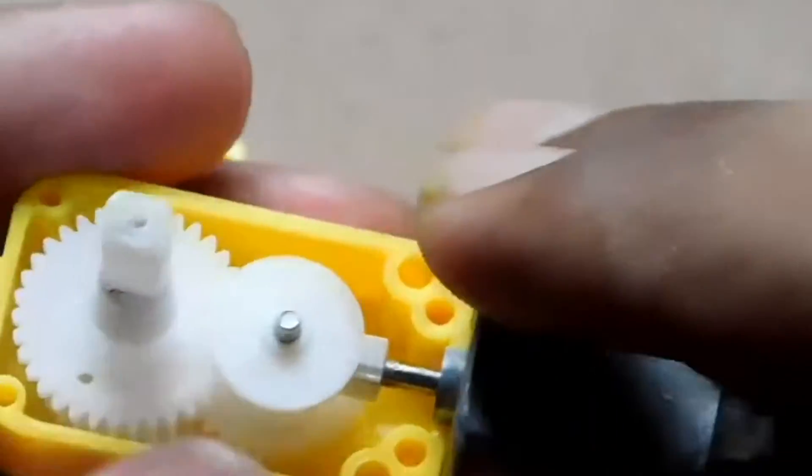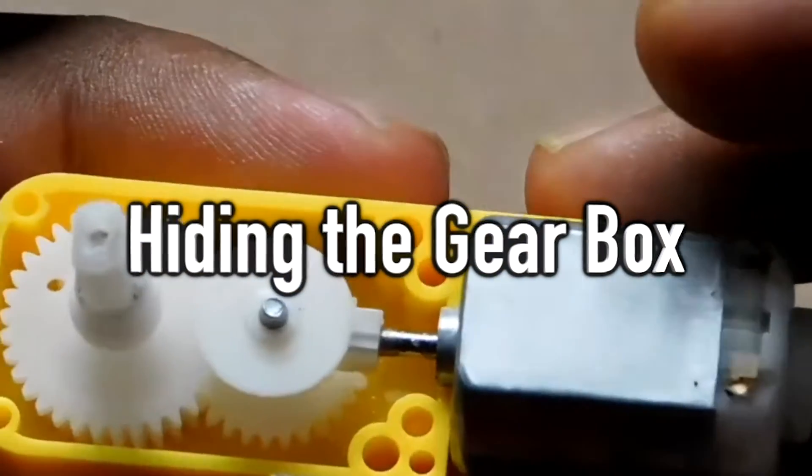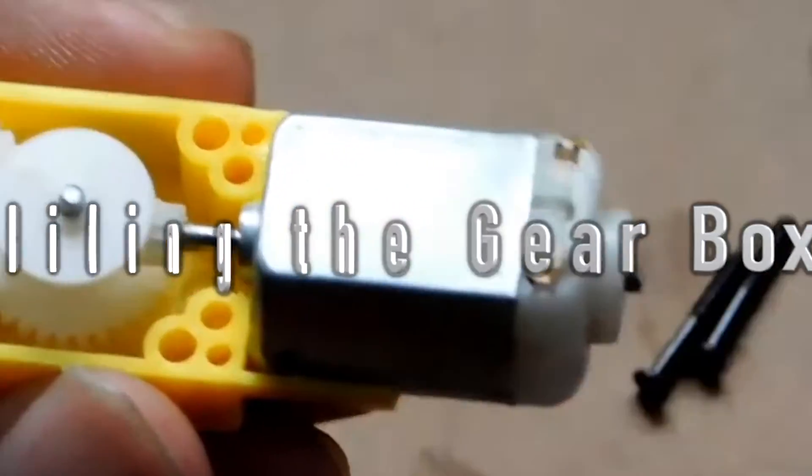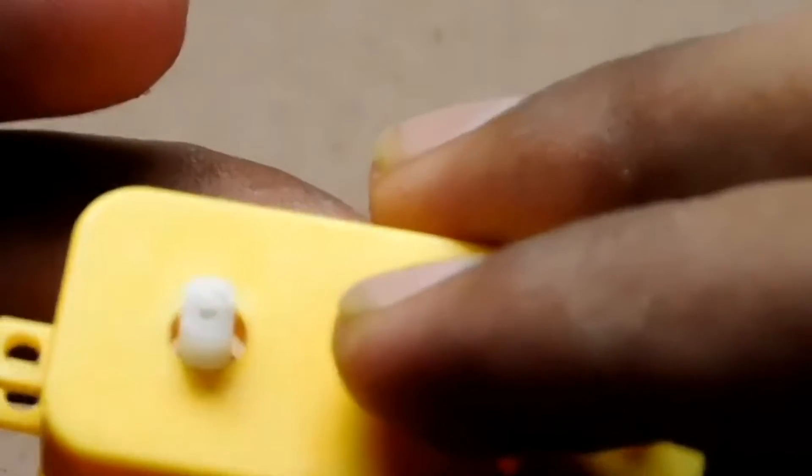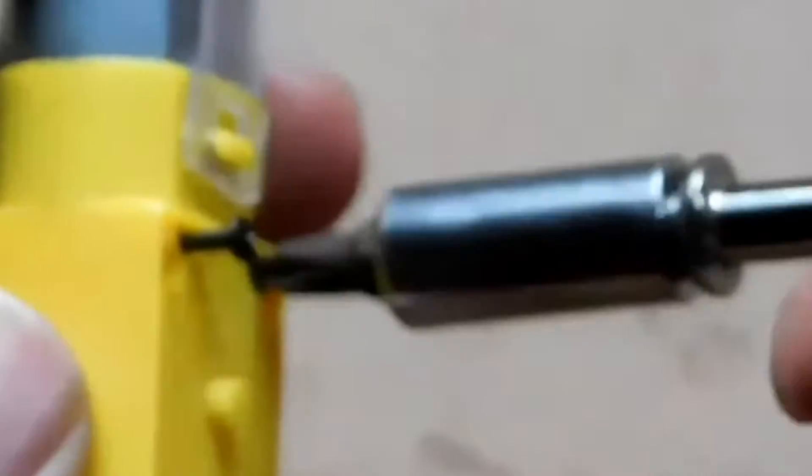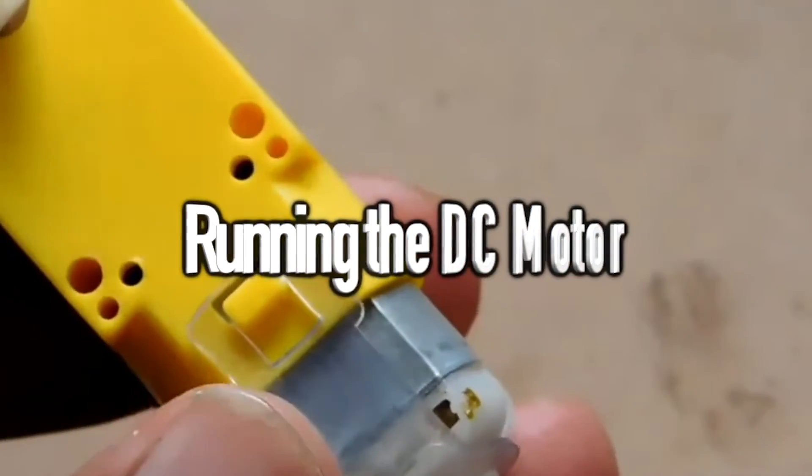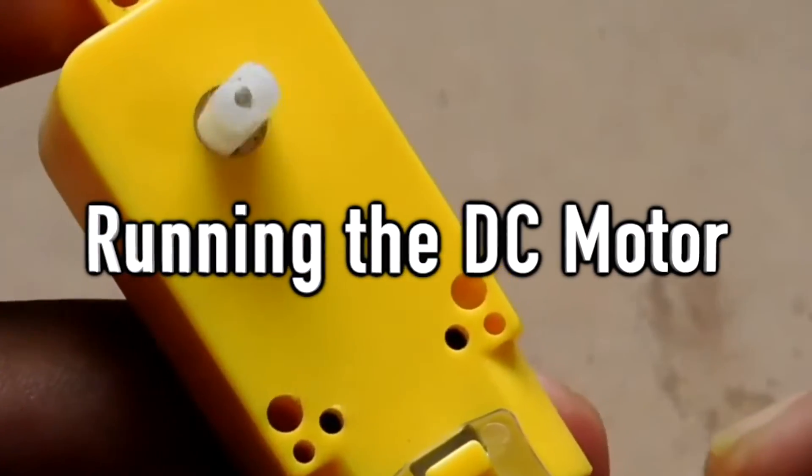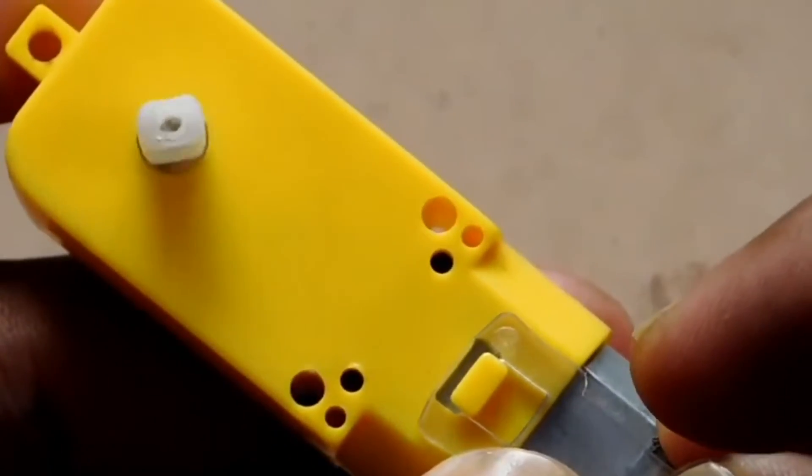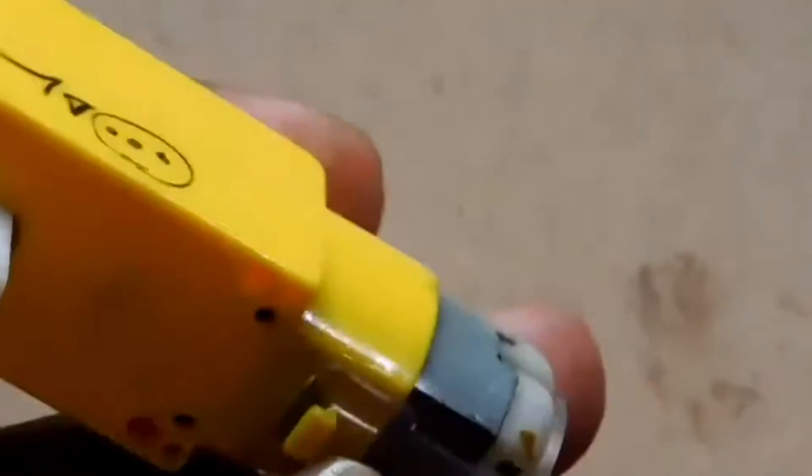We have just reconnected the DC motor to the gearbox. We are running the DC motor again. As you can see here, the motor is running slow because of being connected to a gearbox.